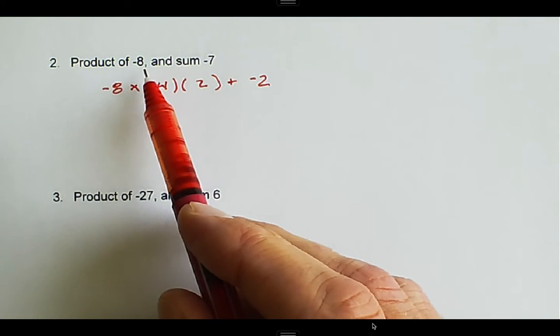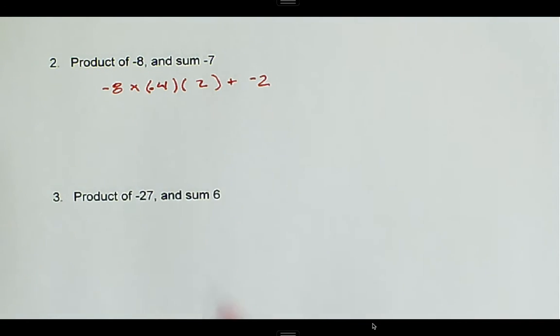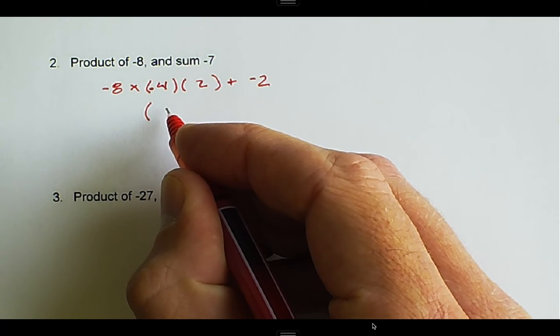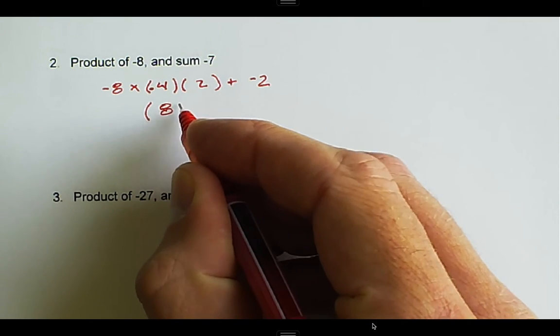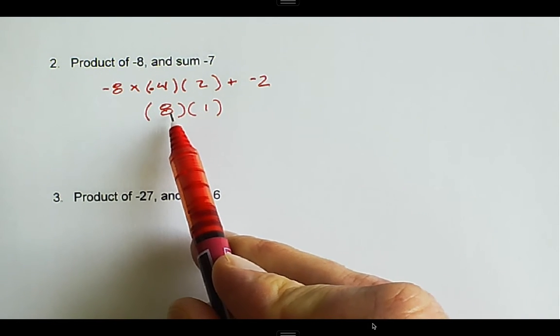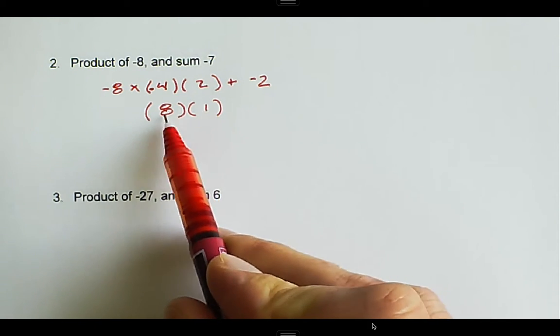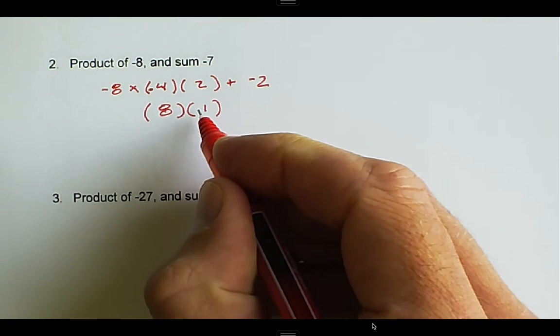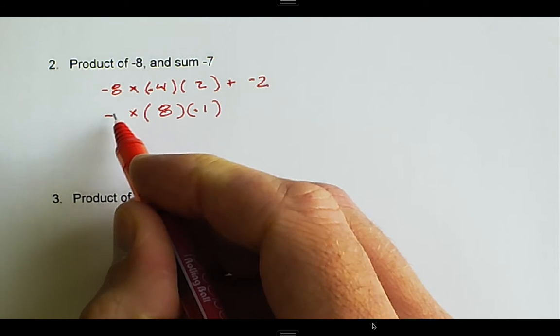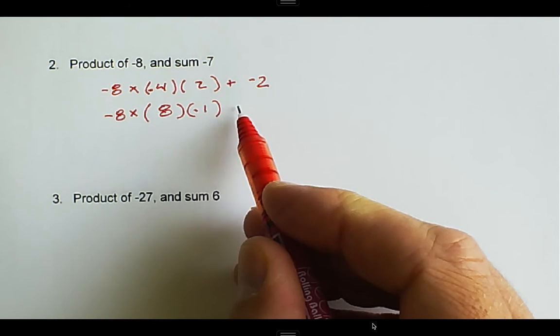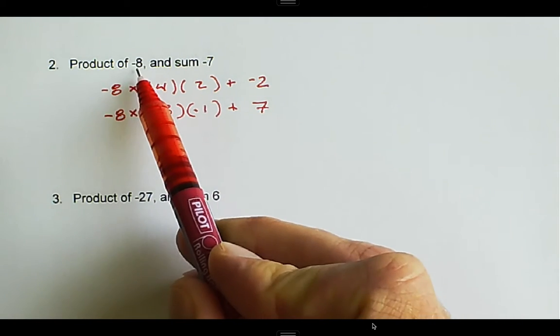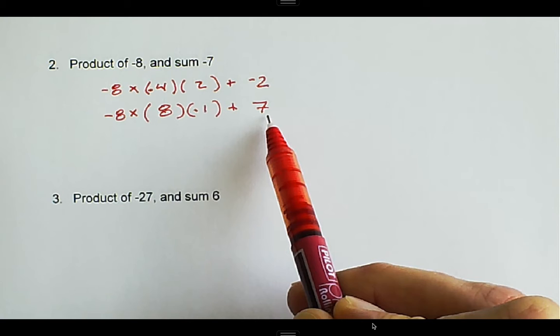What are some other numbers that could possibly multiply together to negative 8? One number that we could always pick is 8 and 1. If we multiply 8 times 1, we get positive 8. I've got to make one of these negative, so I'll try making the 1 negative. 8 times negative 1, if we multiply, that is negative 8. 8 plus negative 1, that's positive 7. So we do have the negative 8, but our sign is backwards here for 7.